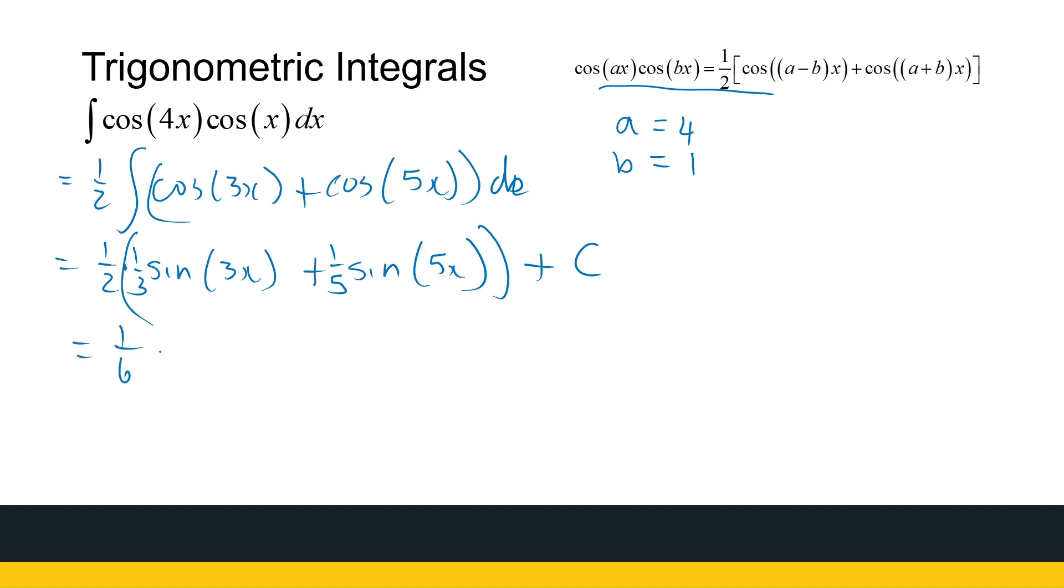So you can just simplify: one over six sin(3x) plus one over ten sin(5x) plus c. Now this one's not necessarily so easy to get back to the original question if we differentiate our answer, but with some manipulation and using your trig identities, you can get there.